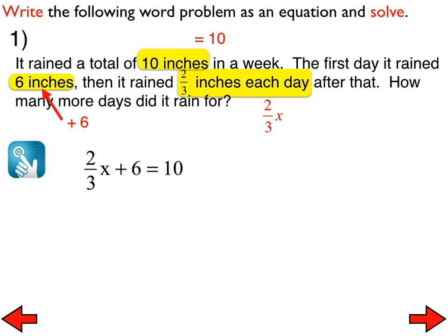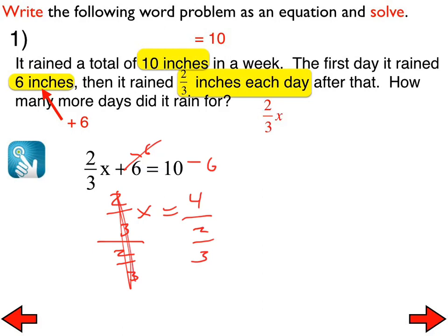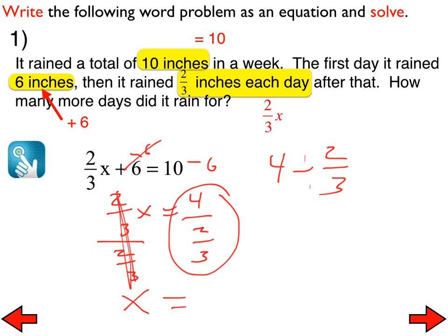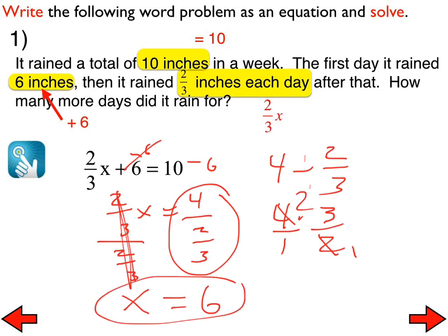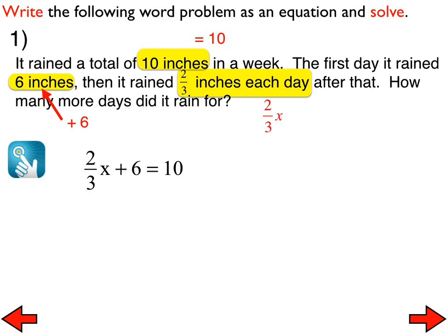For number 1, we would need to subtract 6 from both sides — do not skip steps. That leaves us with two thirds x equals 4. At this point we divide both sides by two thirds. Two thirds over two thirds is 1, so we know it's going to be x equals something. I need to figure out what 4 divided by two thirds is. The top number is 4 divided by the bottom number two thirds, so we have 4 divided by two thirds. We turn that into a multiplication problem, do some cross-dividing, and we end up with x equals 6. But we need to answer the question — how many more days? It would need to rain for 6 more days.